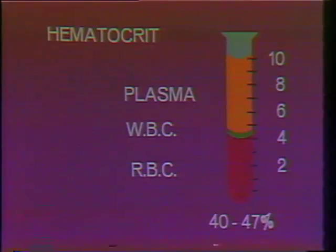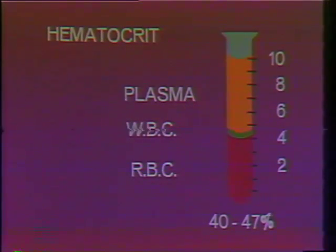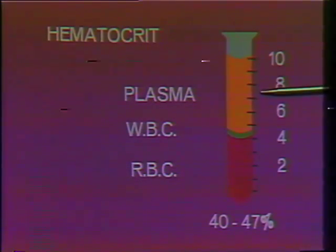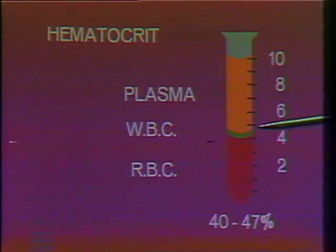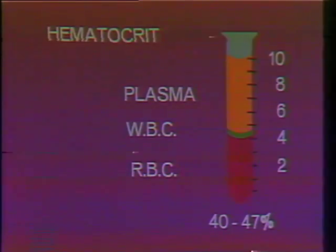The hematocrit measures the proportion of cells in blood to the plasma. The hematocrit is determined by centrifuging a specimen of blood, and it layers out into three layers. The top layer is the plasma, making up somewhere in the neighborhood of 55% of the total specimen, shown in yellow. Below that, the white cell layer is depicted in green. And still below that, the red blood cells are shown in a maroon colored layer. The normal hematocrit level varies from 40% to 47% in general.